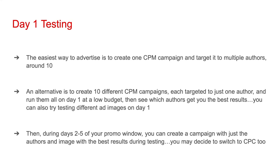You want to look for ads that bring in a lot of impressions at a low cost per click. If you want to try testing different ad images, I recommend you do this on day one — create a different campaign for each image variation at a low budget, and look at the number of impressions and the cost per click. Once your data comes in from day one, look at your best performing author targets and images. During days two through five of your promo window, create a campaign with just the authors and image that had the best results. If your CPM ads on day one are not getting good results at all, on days two through five you can switch to a CPC type campaign.